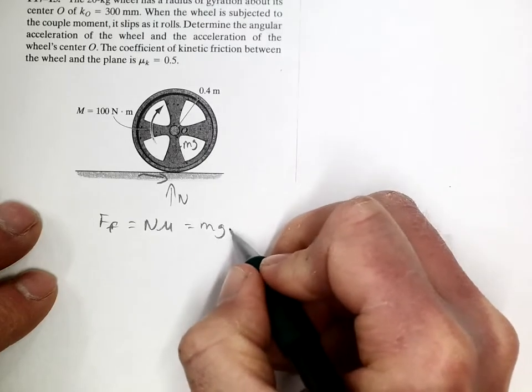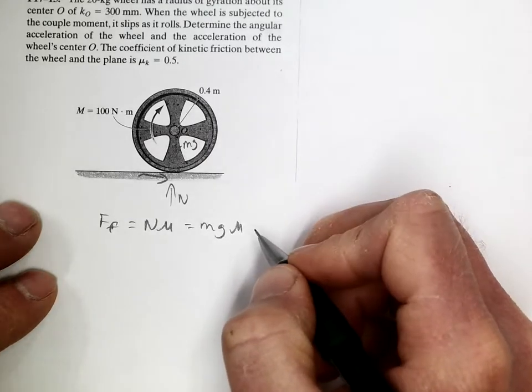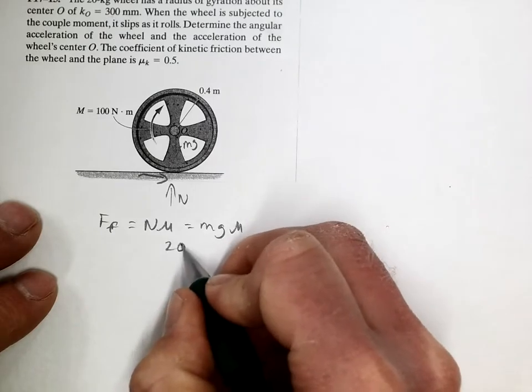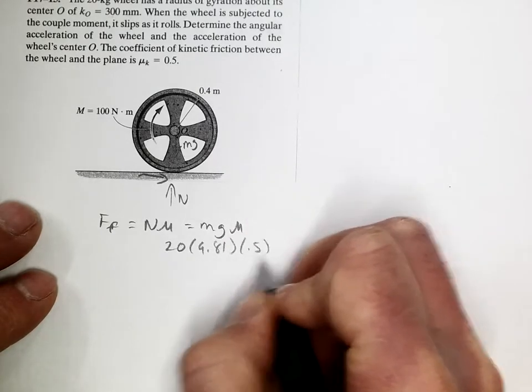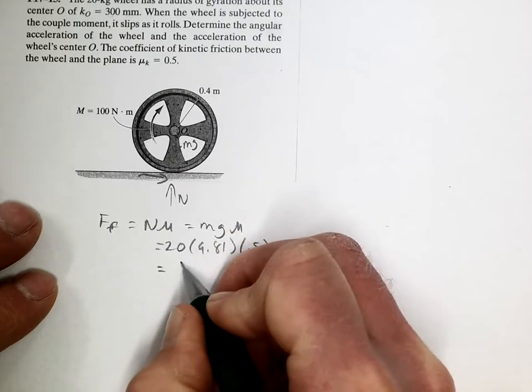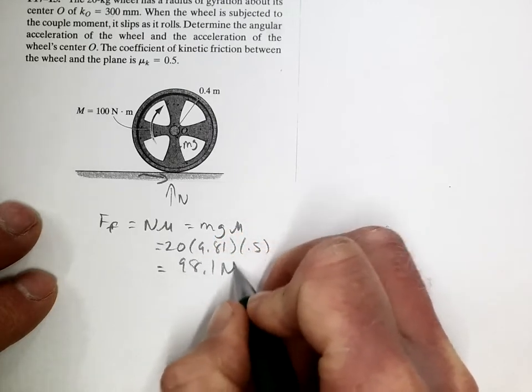So mg times mu is the force of friction, which is 20 times 9.81 times 0.5, which equals 98.1 newtons.